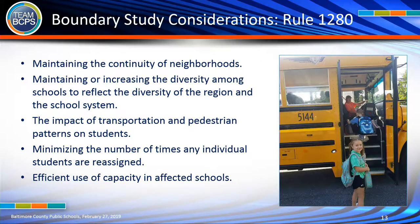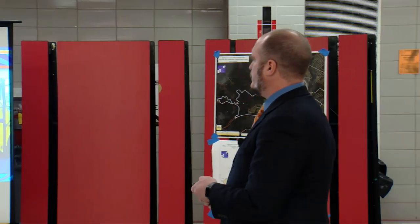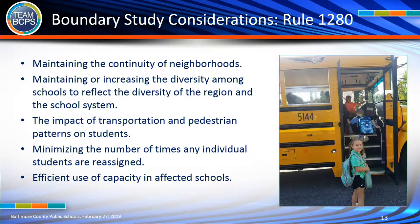We have rules to follow referred to as boundary study considerations, and these orient the committee, the public, and the school board. When looking at scenarios for a boundary change, you step back and answer which option best adheres to these overall considerations. These include: maintain continuity of neighborhoods, maintain or increase diversity among schools to reflect the region, and consider the impact of transportation and pedestrian patterns — being mindful of walkers and trying not to take away the opportunity for children to walk to school.